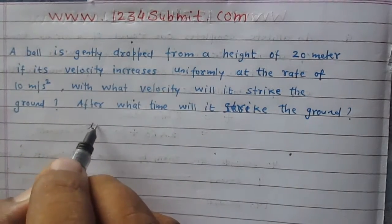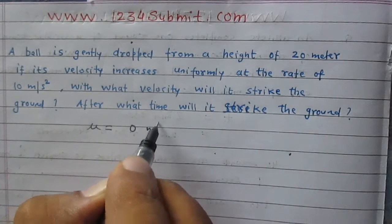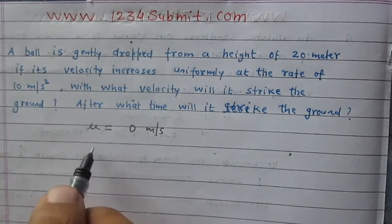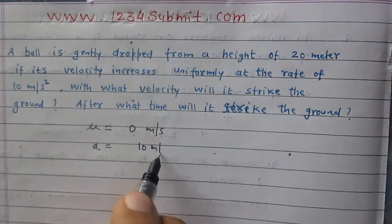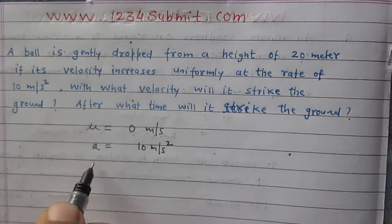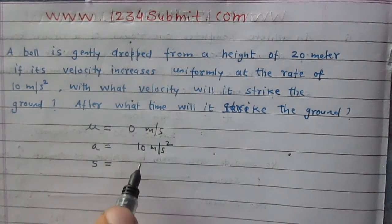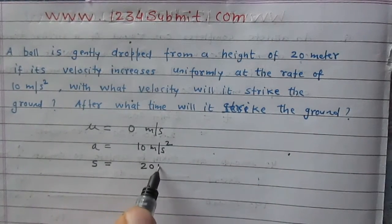Initial velocity of the ball is 0 meter per second. Acceleration, the rate of change of velocity, is 10 meter per second square. And displacement covered by the ball just before it touches the ground is 20 meters.